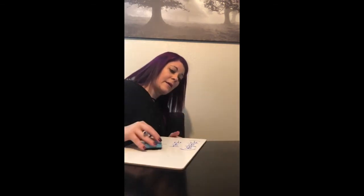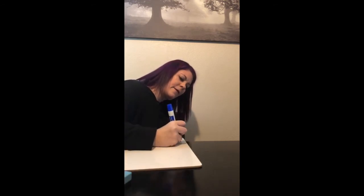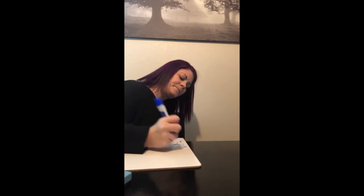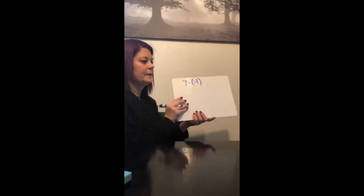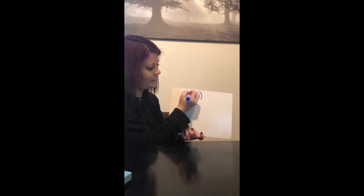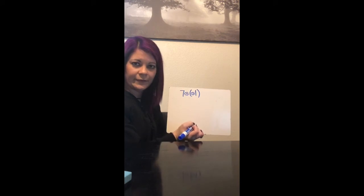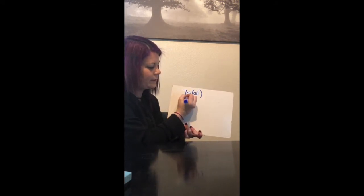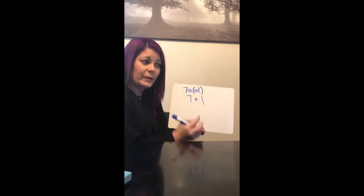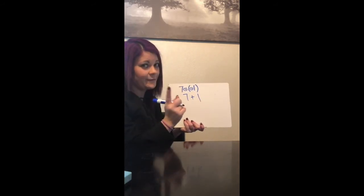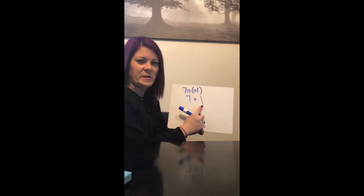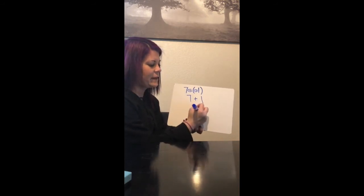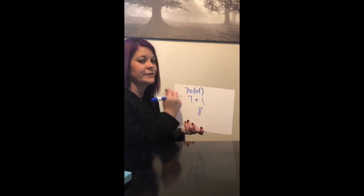So when you see a subtraction and negative sign side by side, just remember those two lines can make a shape called a plus sign. For example: 7 minus negative 1. We see a subtraction sign and a negative sign side by side, so those two lines make a plus sign, giving us 7 plus 1. We have $7 in our bank, my mom just gave me $1, and now I have $8 in my bank. That's a good situation.